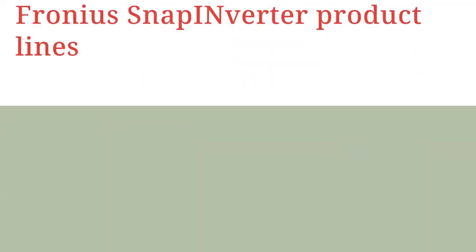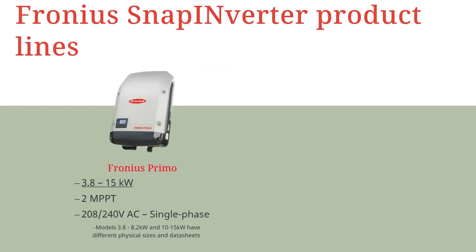Our flagship residential inverter is the Fronius Primo. The Primo is our single-phase inverter ranging from 3.8 kW to 15 kW, perfect for small to large residences. The Primo features two maximum power point trackers and can be integrated into a single phase of a 208-volt grid or on a split-phase 240-volt grid. There are two variants of the Primo with different physical size and design parameters, so be sure to use the correct data sheet.